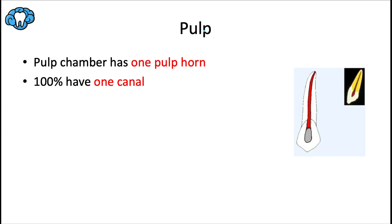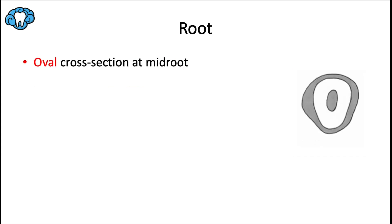Regarding the pulp: because we have a cusp rather than an incisal edge, the number of pulp horns changes. Previously all incisors had three pulp horns — or one in the case of a peg lateral — but since the canine has only one cusp, it has only one pulp horn. This tooth almost never branches into multiple roots, so for ease of learning we say 100% of maxillary canines have one pulp canal. Although the crown has a diamond shape from the incisal view, a cross-section at the middle of the root would show an oval shape.